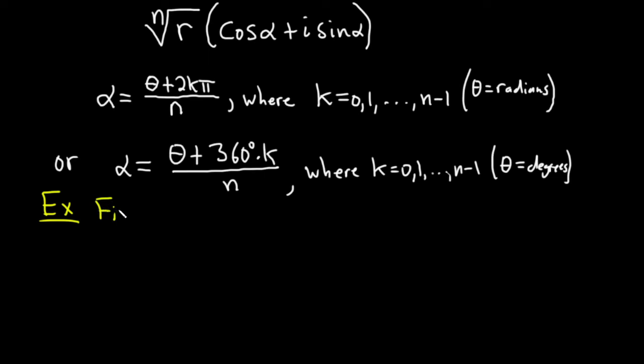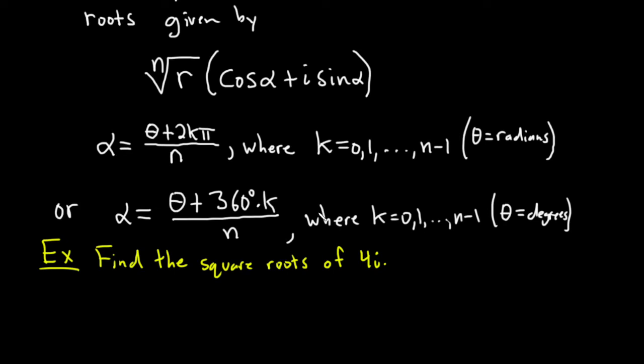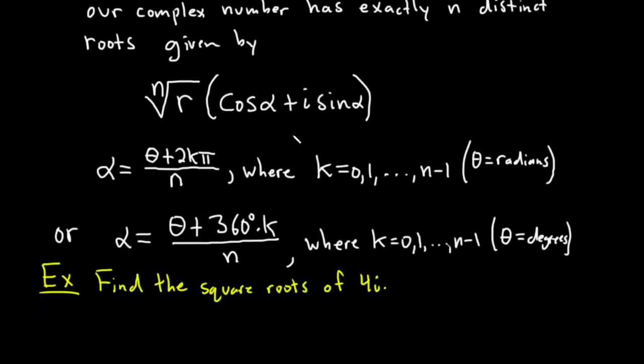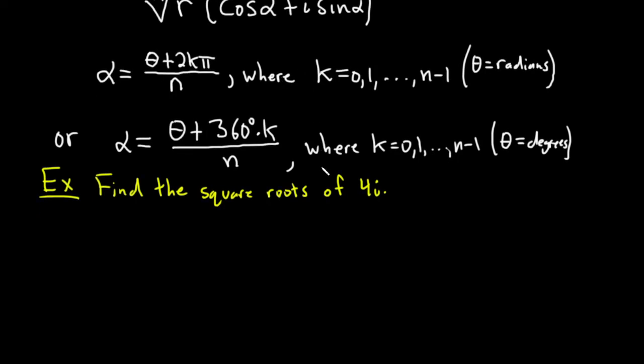We'll find the square roots of 4i. So you'll notice that in this formula, the complex number was written in polar form. So a good first step would be to write 4i in polar form, which is also called trig form.